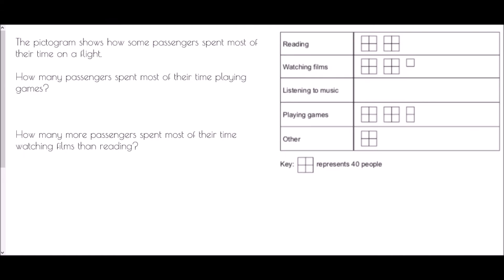In our next one, the pictogram shows how some passengers spent most of their time on a flight. So we've been given a key this time. We've got little boxes split again into four pieces but that represents forty people. So what we can take from that straight away is that if the whole diagram is forty people, well what does each of the little squares mean? Well forty into four pieces would be ten, ten, ten, and ten. So each of the little squares is worth ten people.